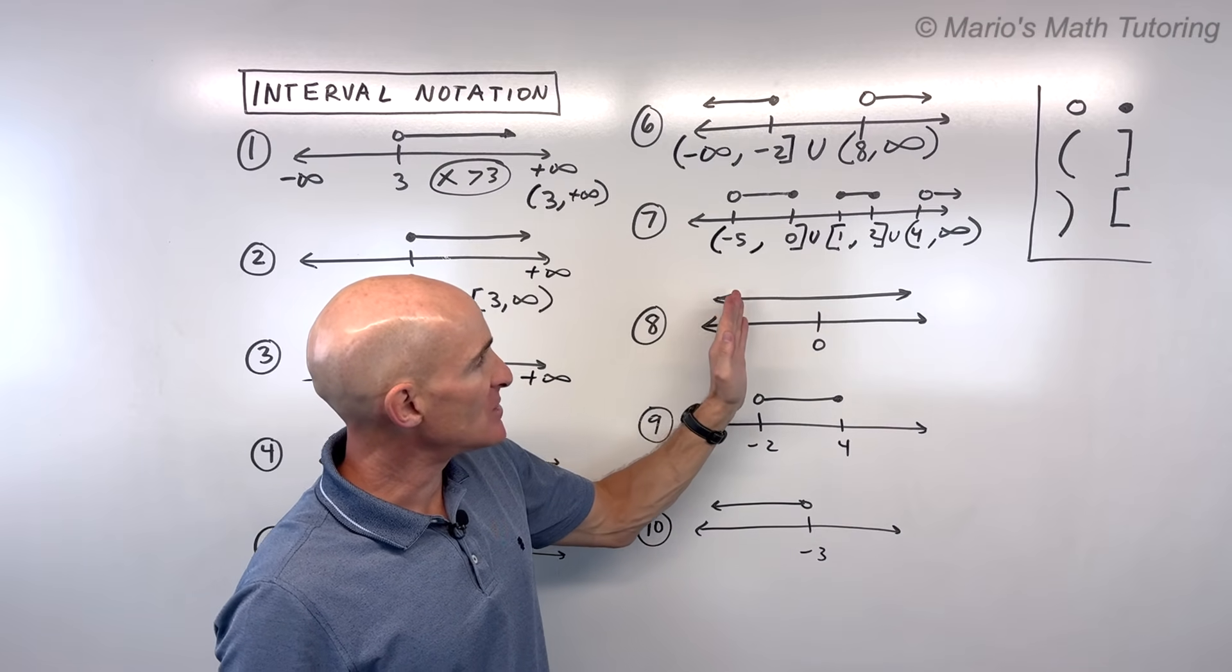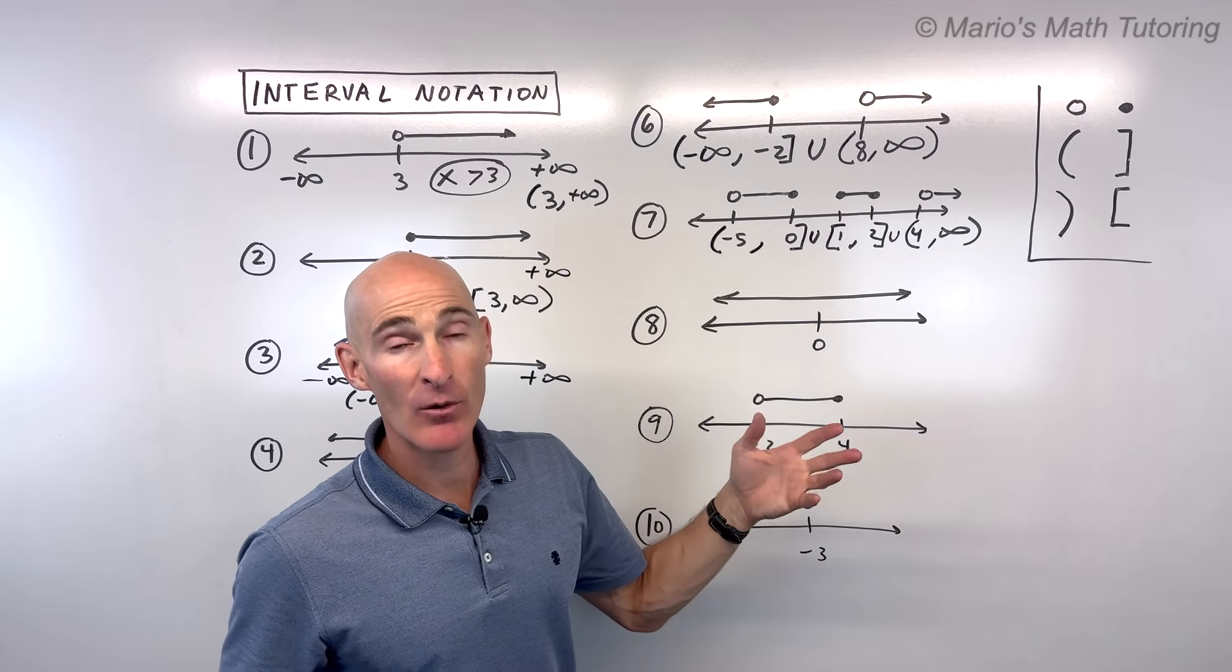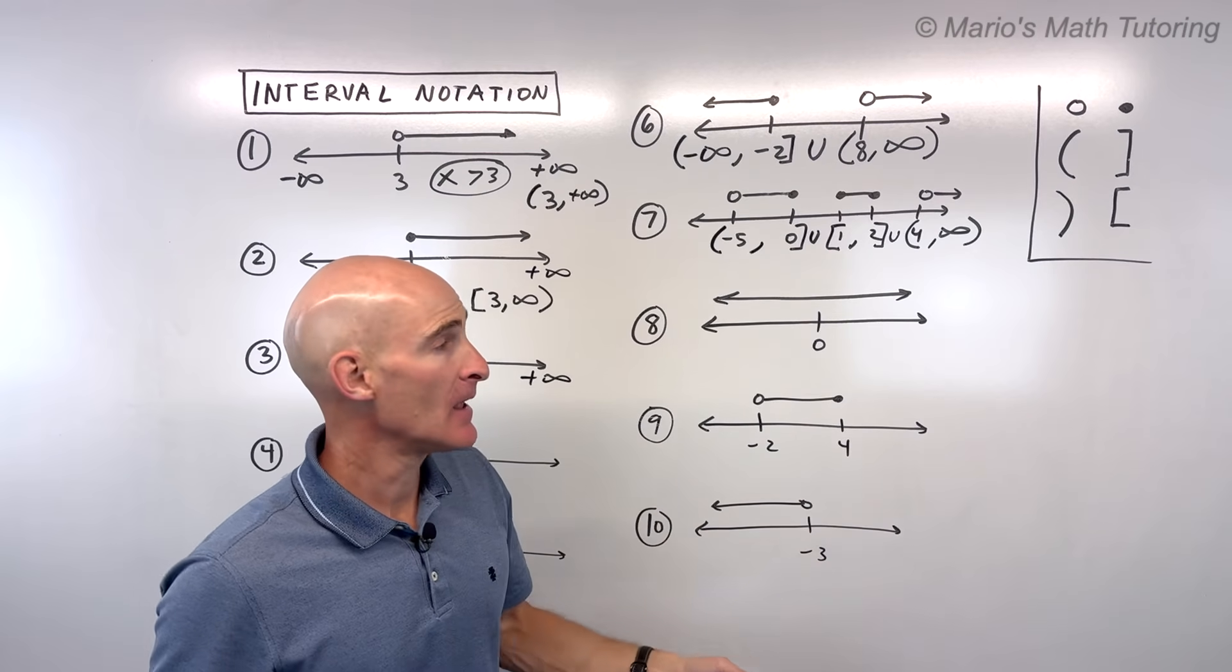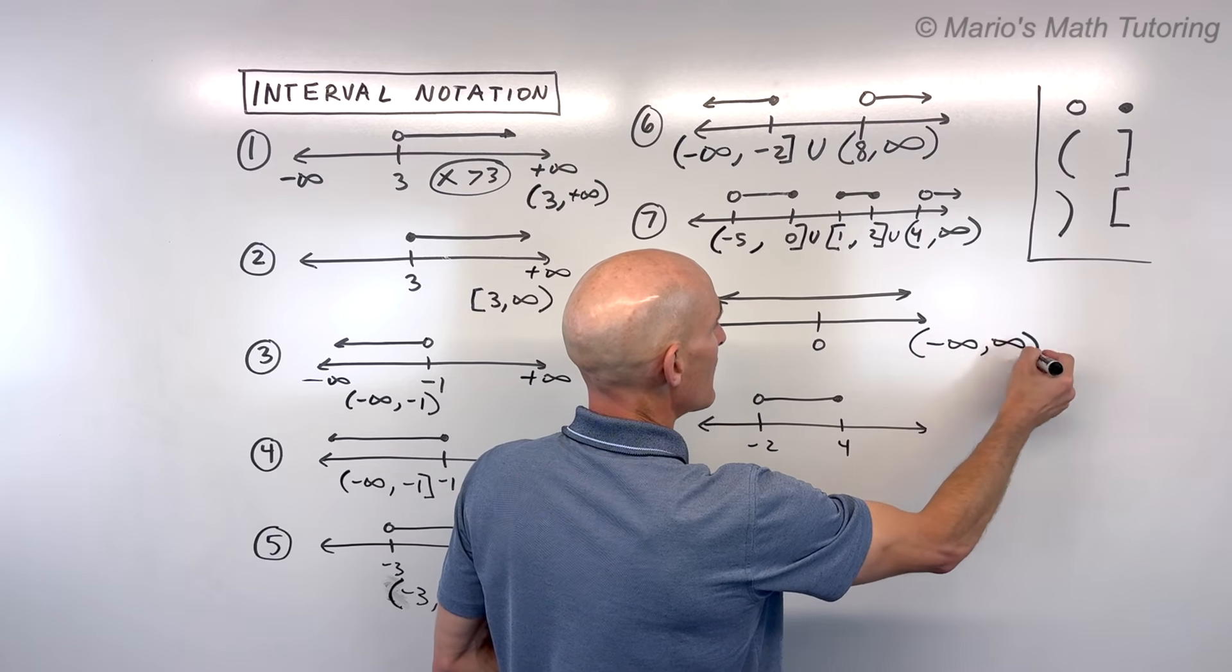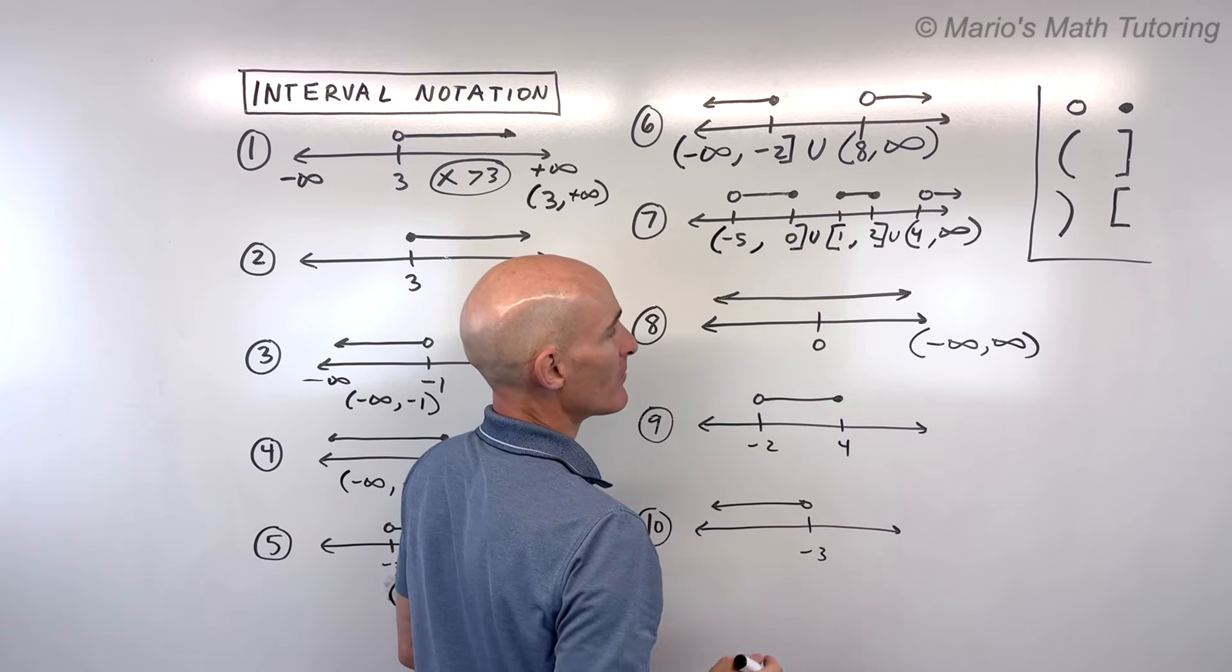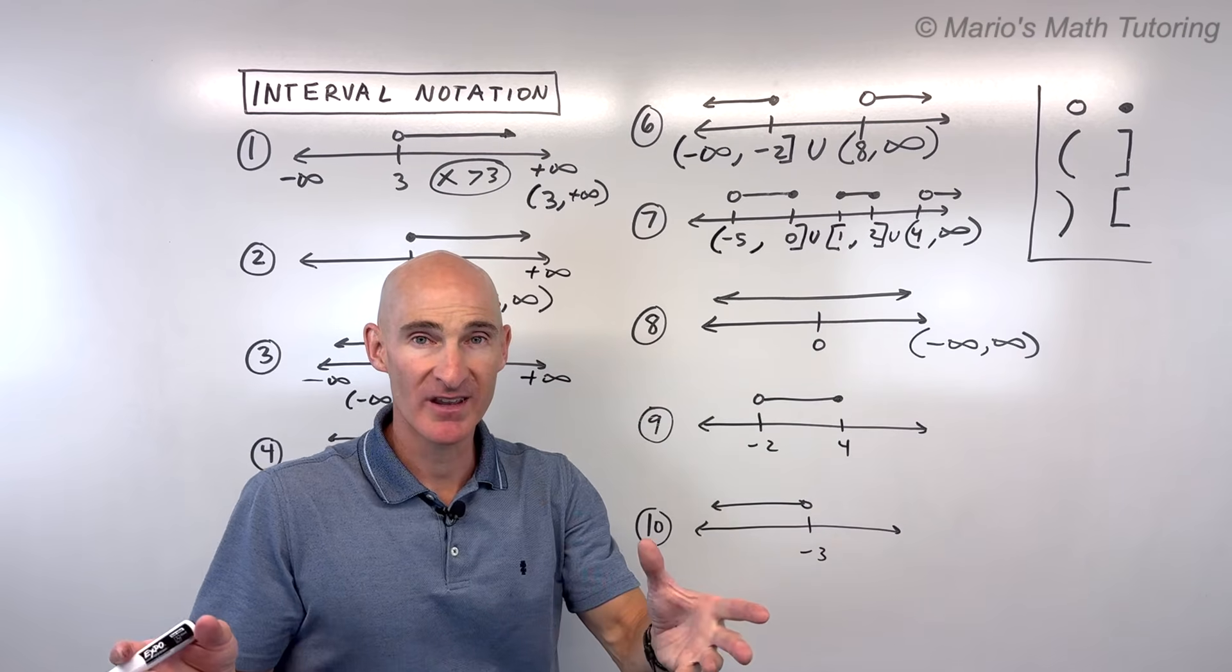For number 8, imagine if this whole number line was shaded. We would normally say that's all real numbers. In this case, with interval notation, we write it like this: negative infinity to positive infinity. From negative infinity all the way to positive infinity. Can't reach infinity, that's always open.